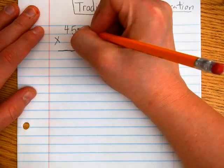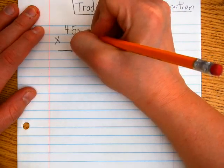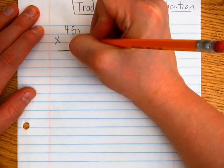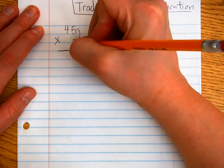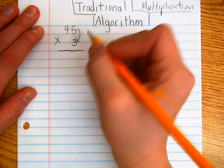Okay, excellent. When you use the traditional algorithm especially, it's much easier to put the larger number of digits on the top to do your multiplication.